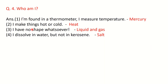Question 4, who am I? I am found in thermometers and measure temperature — answer: mercury. I make things hot or cold — answer: heat. I have no shape whatsoever — answer: liquid and gas, since only solids have a definite shape. I dissolve in water but not in kerosene — answer: salt. We have discussed some questions from Chapter 5; remaining questions will be discussed in the next lecture.